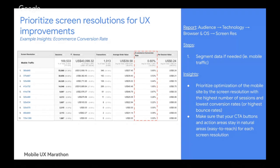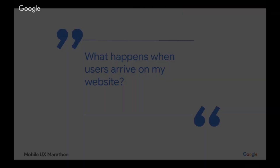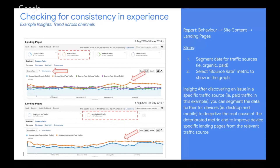Now that we have a few prioritized dimensions, the next question is: what happens when users arrive on my website? Post-click, what experience are we providing, and is it consistent with the messaging the user received before coming to the website? The first report to help check for consistency is the Behavior, Site Content, Landing Pages report. The first step is to apply segments for different traffic sources: organic, paid, referral, and direct traffic.